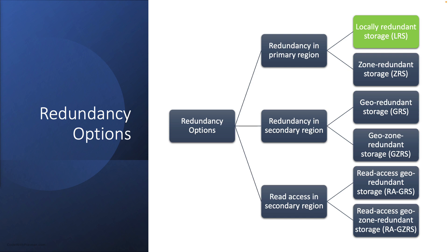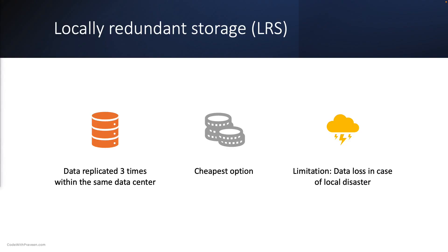First, we will check out Locally Redundant Storage, shortly LRS. It is the simplest among all the redundancy options and involves only a single region. LRS replicates your data three times within a single data center, providing a minimum of 11 nines of durability. While it is the most economical option, it is also associated with the risk of data loss in the event of a disaster within the data center. This is ideal for a simple use case that needs redundancy at a less severe level.